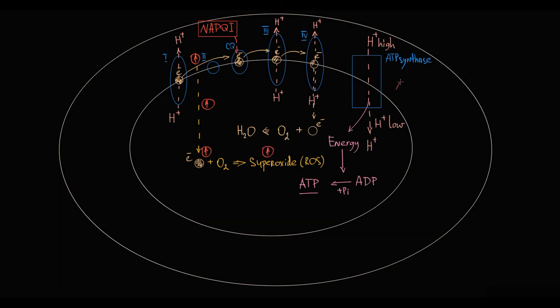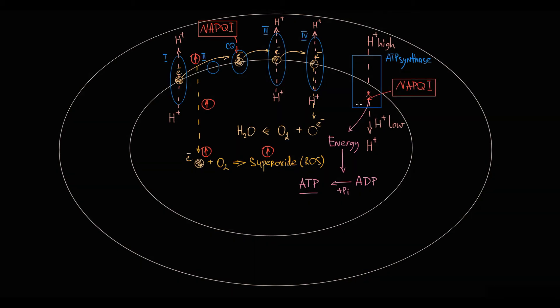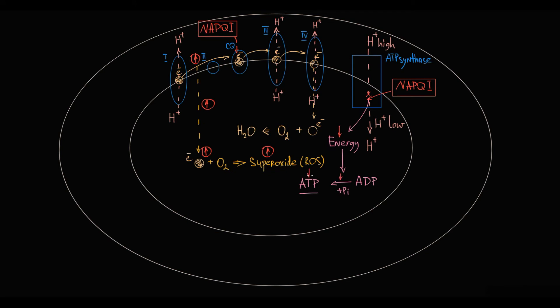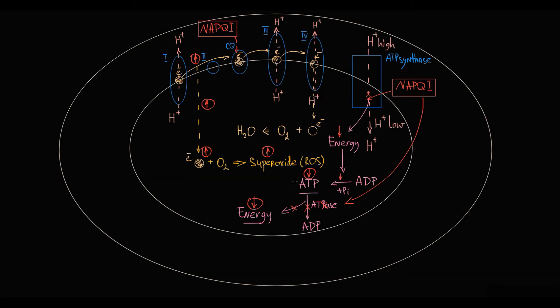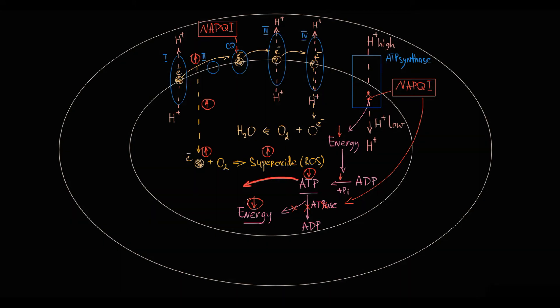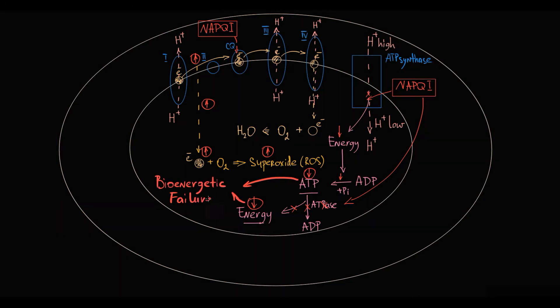When N-acetylbenzoquinonimine binds to ATPase and disrupts its function, hydrogen transport via the concentration gradient becomes impossible and energy cannot be generated. Without functional ATPase, ATP molecules cannot be hydrolyzed to release energy. Progressive decrease in ATP molecules, together with decreased ATP hydrolysis, at some point causes bioenergetic failure of the cell.